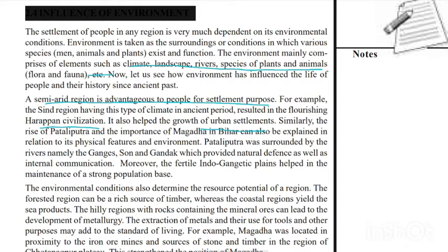Similarly, the rise of Pataliputra, which is modern Patna, and the importance of Magadha in Bihar, can also be explained in relation to its physical features and environment. Pataliputra was surrounded by rivers, namely the Ganga, Son and Gandak, which provided natural defense as well as internal communication.